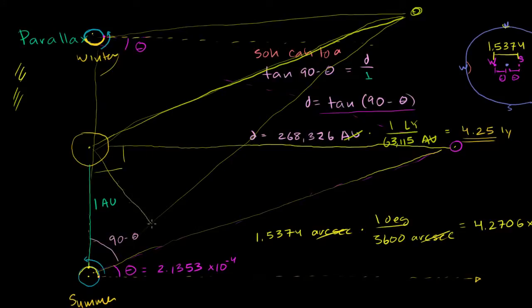you want to pick a point in Earth's orbit around the sun here, and then another point in the orbit six months later, which would put us right over here.